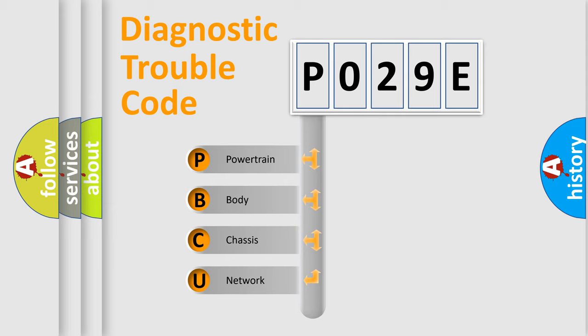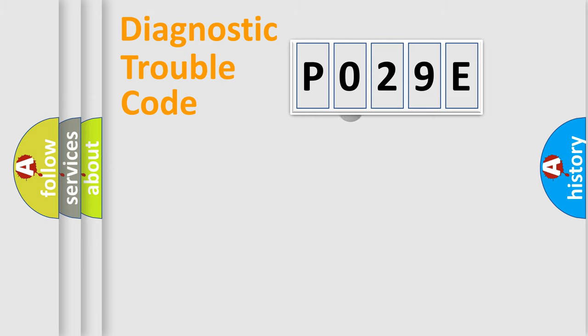We divide the electric system of automobile into the four basic units: Powertrain, Body, Chassis, Network. This distribution is defined in the first character code.